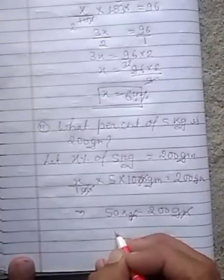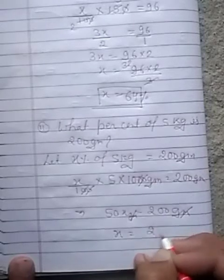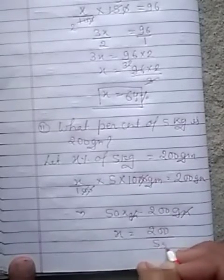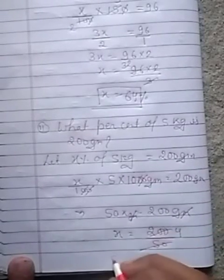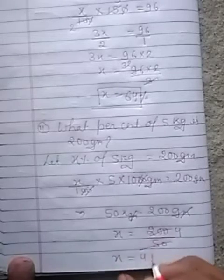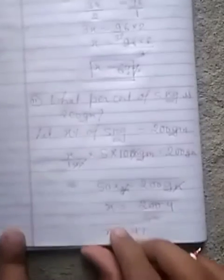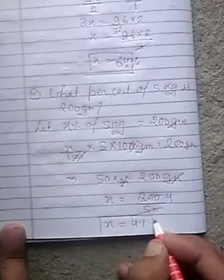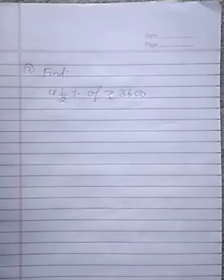So x is equal to 200 upon 50. That means 4 percent. Our answer is 4 percent.